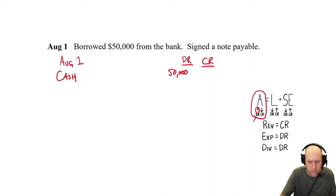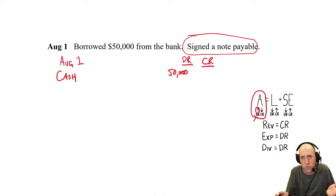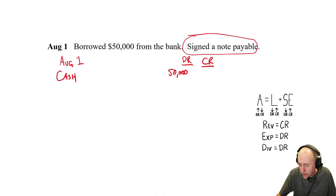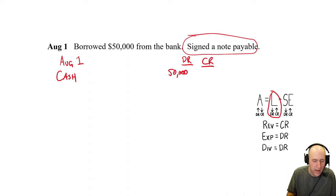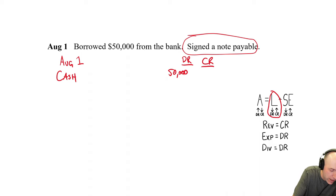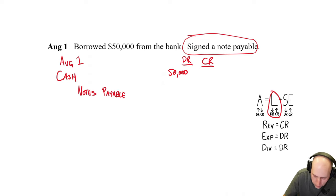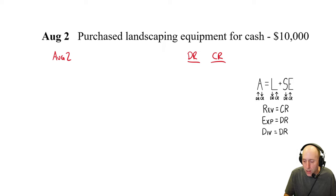August 2nd: purchase landscaping equipment for cash, $10,000. Did cash change hands? Yes. Is our cash going up or down? It's going down — we paid out cash. To make cash go down, we credit cash. Beginning students sometimes screw this up — they look at their bank statement and see a credit making money go up. Not in accounting; it's the opposite. Credit cash $10,000. What did we buy? Equipment. Equipment is an asset and it is increasing, so we debit equipment for $10,000.